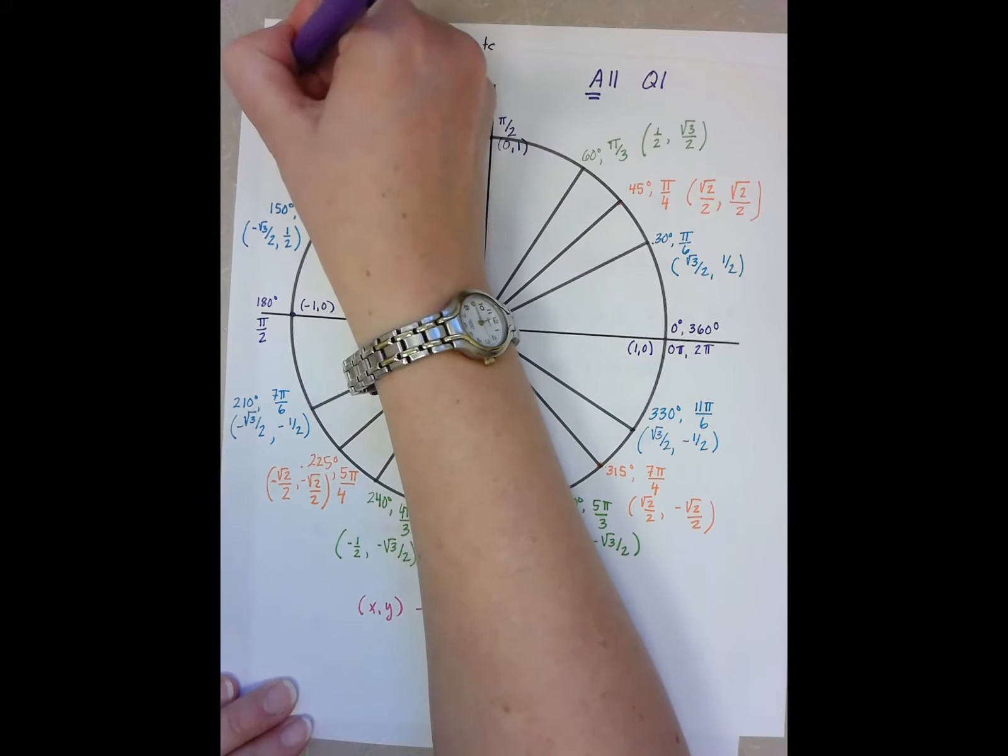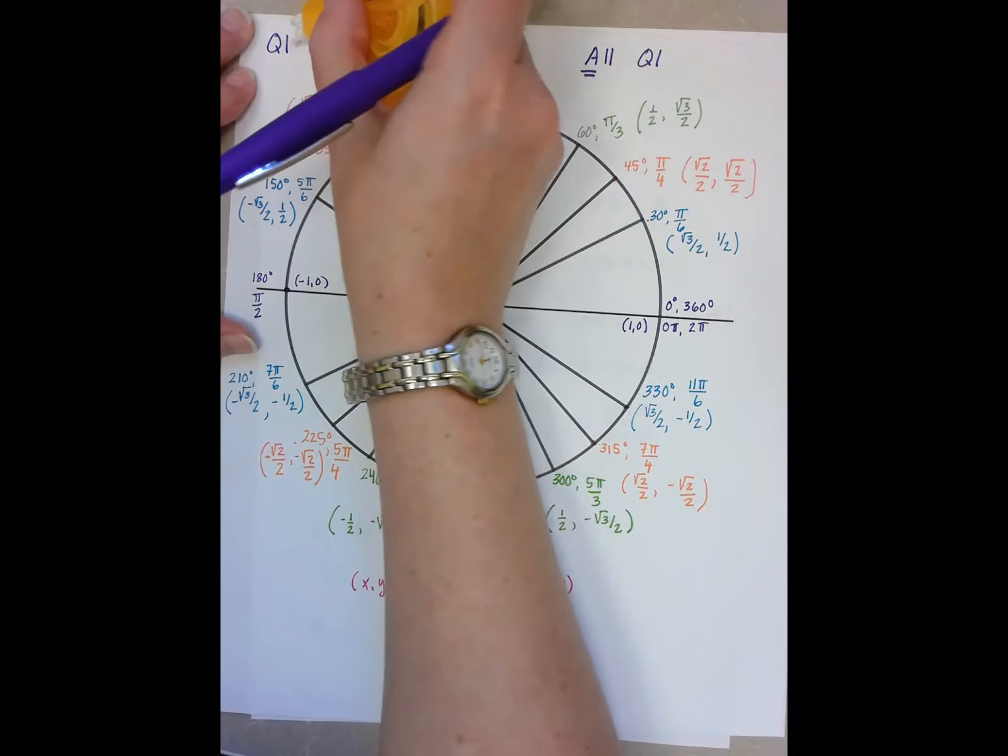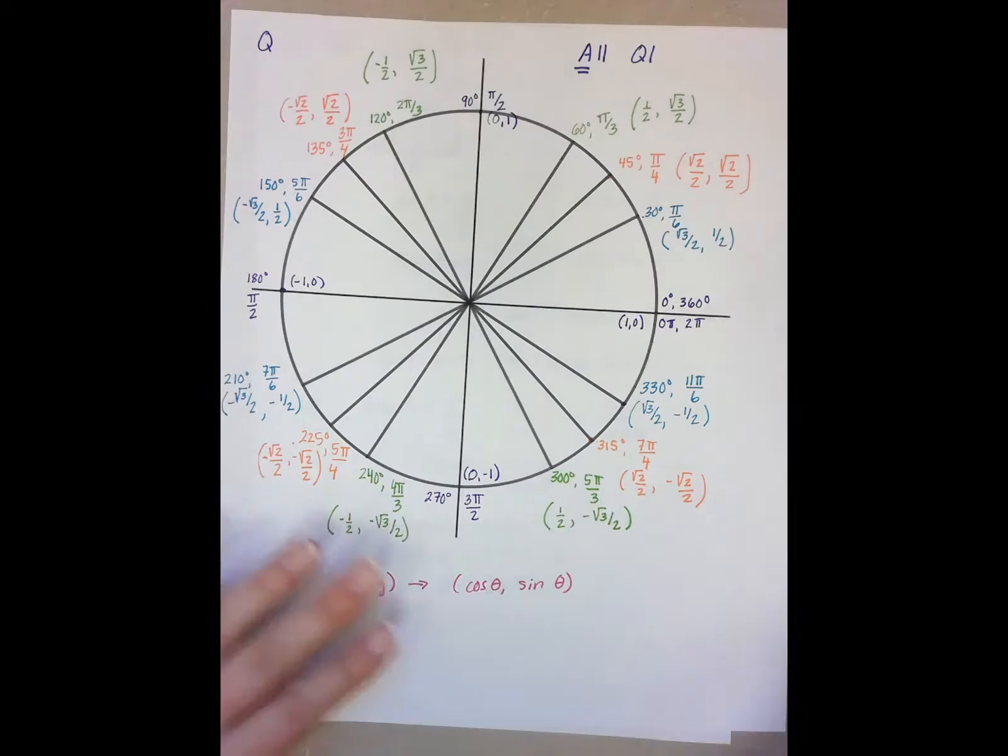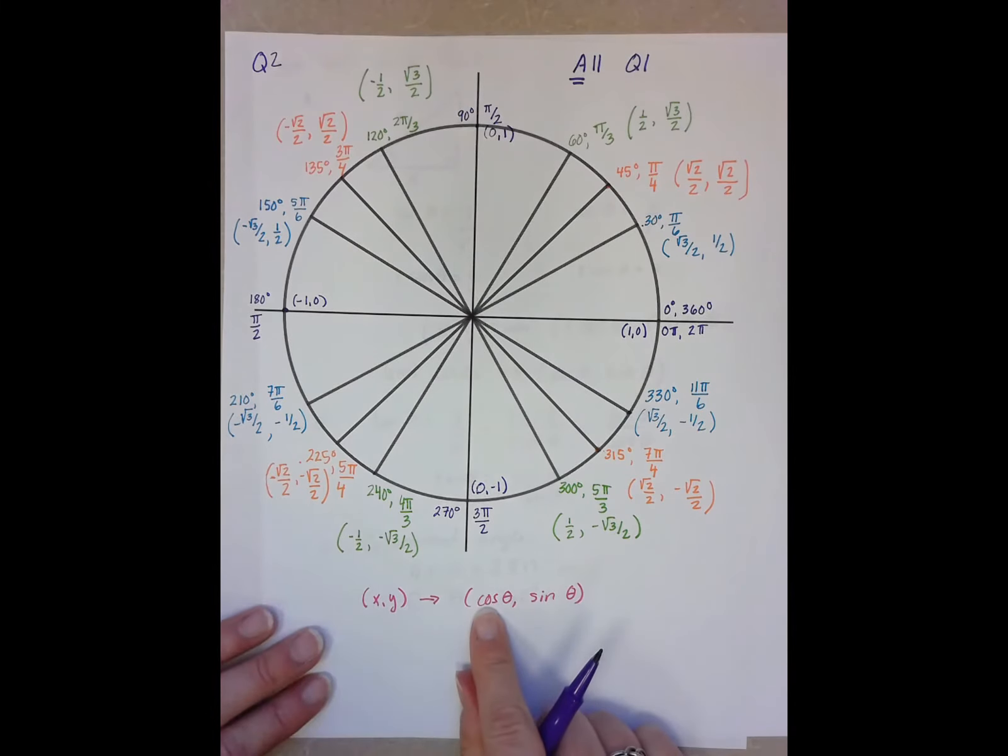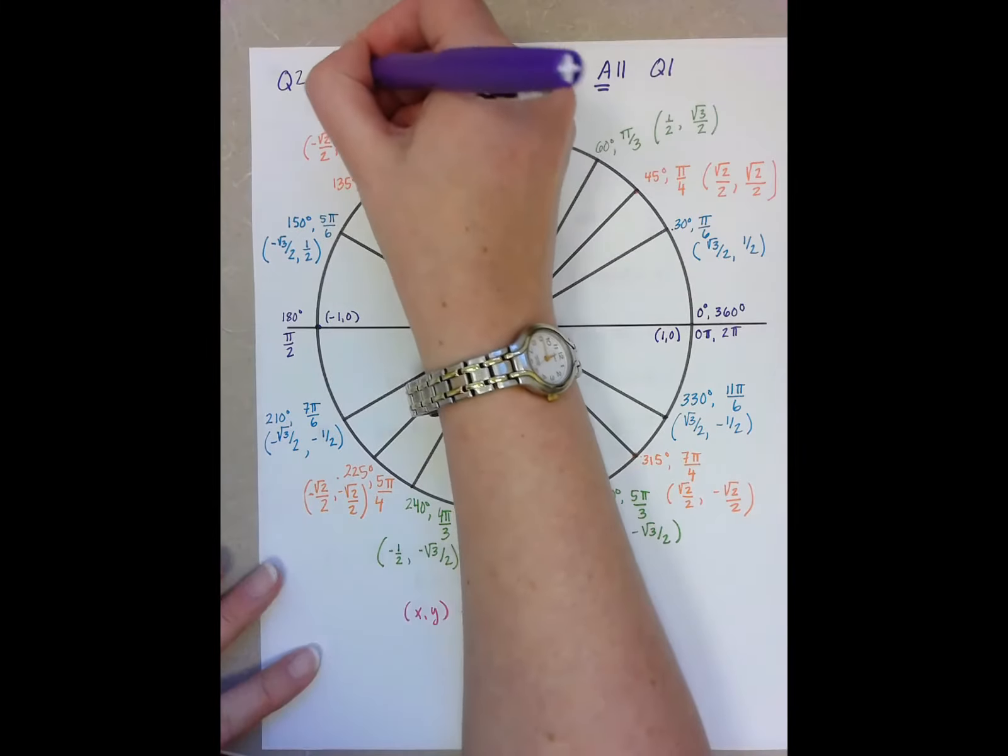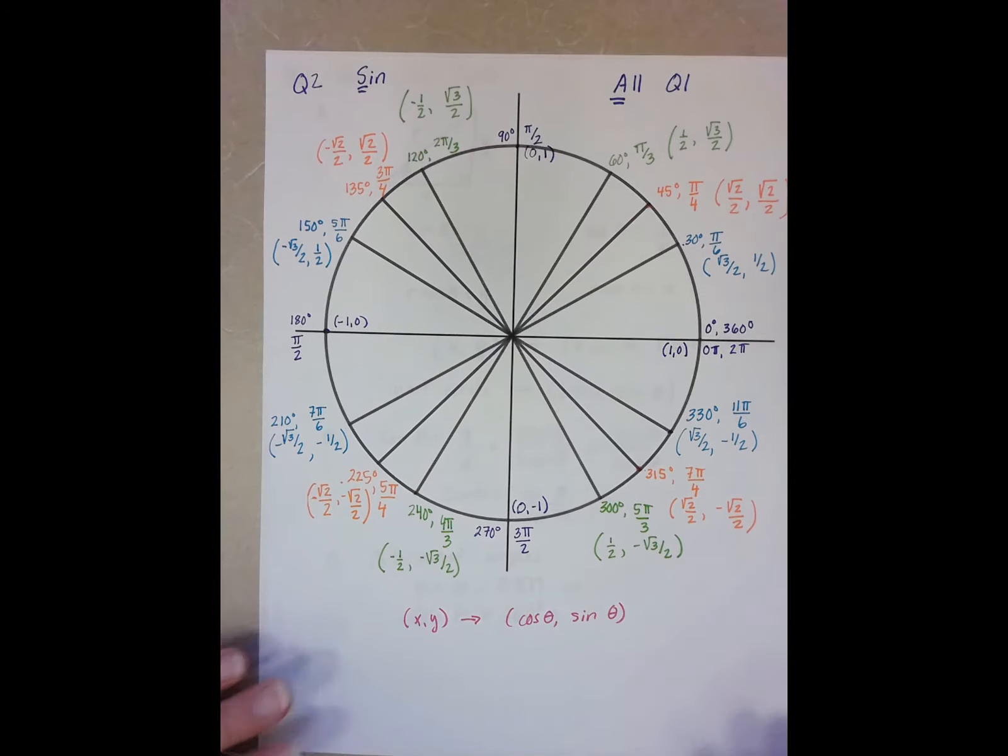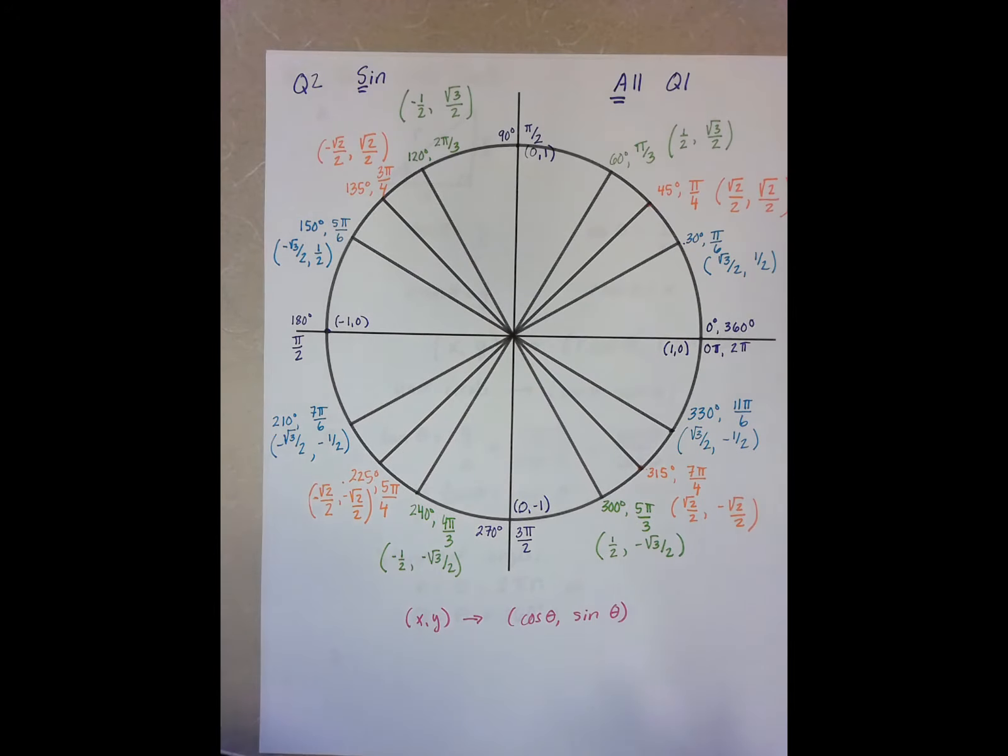In the second quadrant, however, I can see that all of my x's are negative, meaning all of my cosines are negative. So the only thing that's positive here is sine. Of course, again, because tan is sine divided by cosine, if one is negative, it's going to be negative.